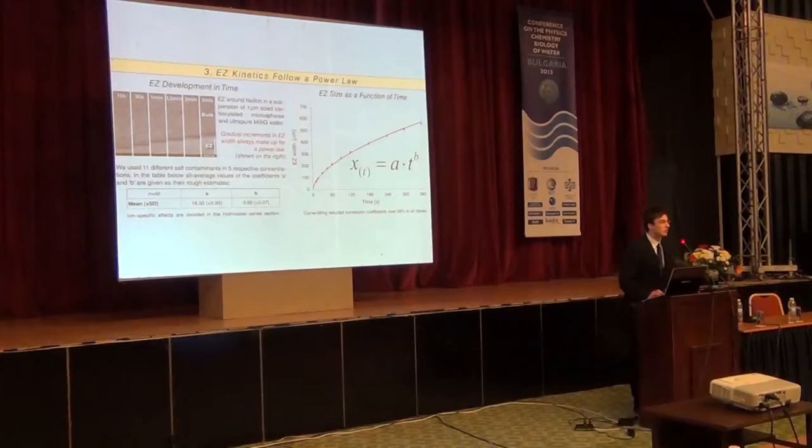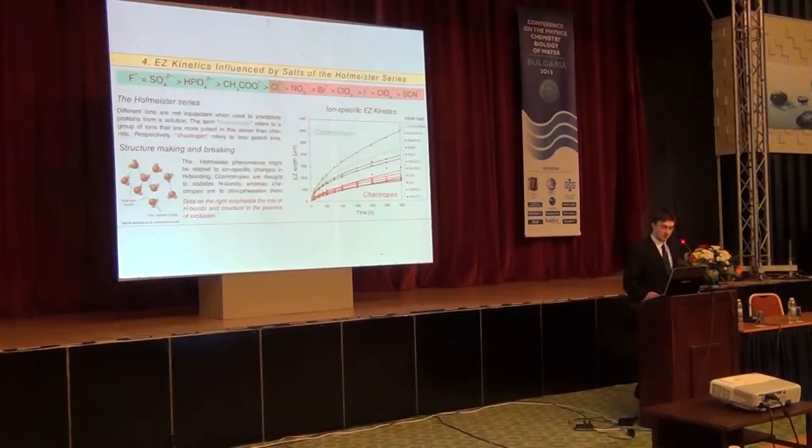We repeated the experiment almost 50 times and the high correlations remained, indicating that the power law we found is applicable to characterize the kinetics of the exclusion process near a Nafion surface. We were curious whether the parameters A or B might change upon addition of ionic contaminants to the system. For this reason, we picked a couple of anions from the Hofmeister series.